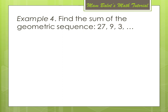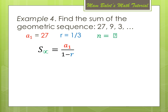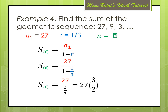For another example, find the sum of the geometric sequence 27, 9, 3, and so on. Here a sub 1 is 27, r is 1/3, and n is infinite. Since r is less than 1, we use the formula a sub 1 over (1 minus r), substituting 27 over (1 minus 1/3). The denominator 1 minus 1/3 equals 2/3. Dividing by a fraction means multiplying by the reciprocal, so 27 times 3/2 gives 81/2, which is the sum of this infinite geometric sequence.